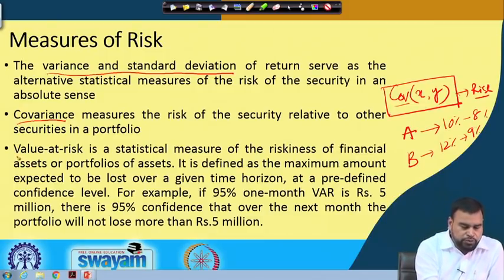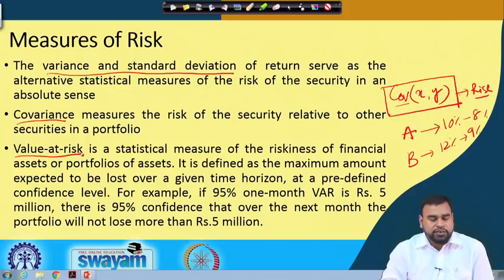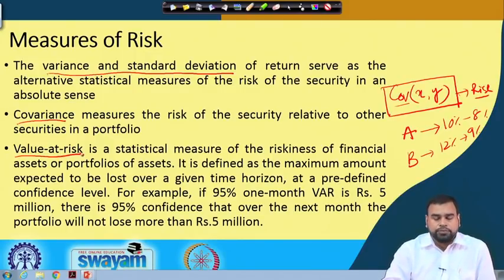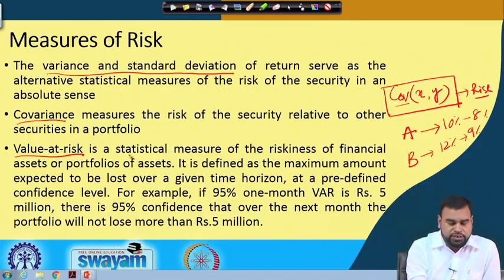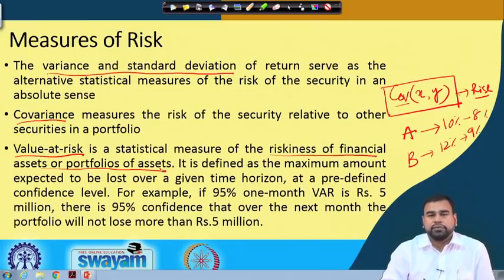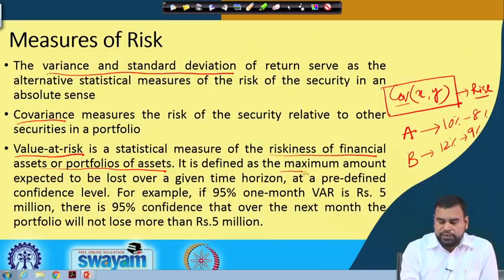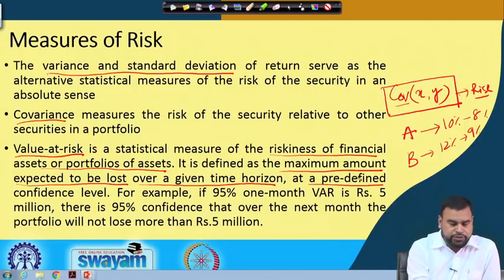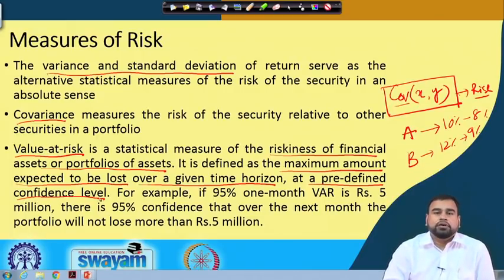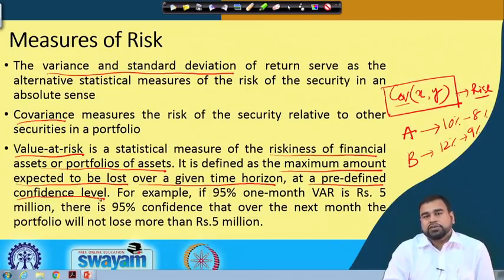Another popularly used measure is called Value at Risk (VaR). The value at risk is a statistical measure of the riskiness of a financial asset or portfolio of assets. It is defined as the maximum amount expected to be lost over a given time horizon at a predefined confidence level. In statistics, when measuring VaR, we consider at what significance level or confidence level we are measuring it — for example, 95 percent confidence level corresponds to 5 percent significance level.